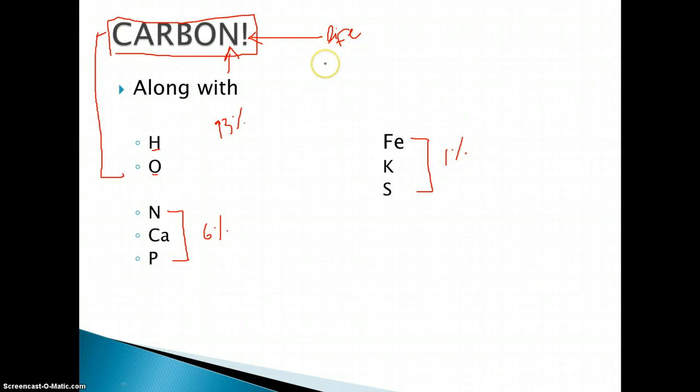Well, if you take a look at a periodic table, you'll notice that carbon has 4 valence electrons or 4 electrons in its outer shell. So what this means is that it can form a covalent bond with 4 different elements. So it can form a maximum of 4 bonds.